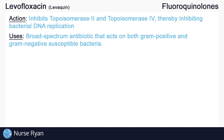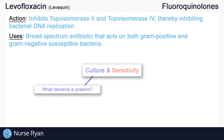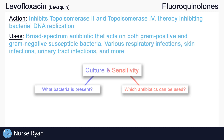This includes both gram-positive and gram-negative susceptible bacteria. To find out which bacteria are susceptible to levofloxacin, a culture and sensitivity test should be performed. The culture test can tell us what bacteria is present in a given sample, and the sensitivity test can tell us which antibiotics will likely work best to treat the infection. Levofloxacin can be used in various respiratory infections, skin infections, urinary tract infections, and more. It is most often ordered orally or intravenously, but it is also available as an ophthalmic solution for various eye infections, including bacterial conjunctivitis.